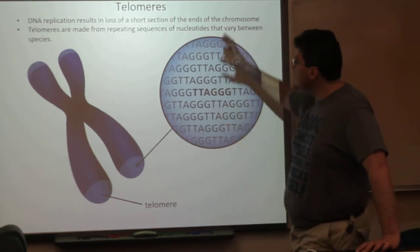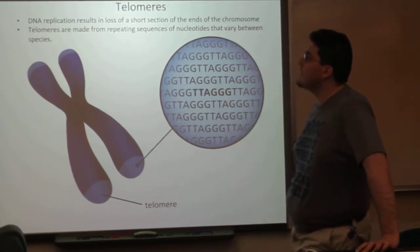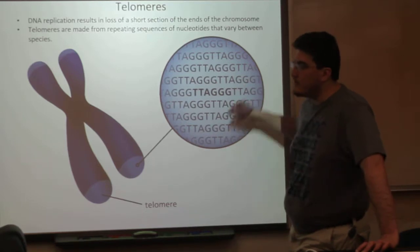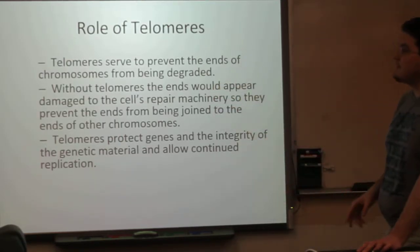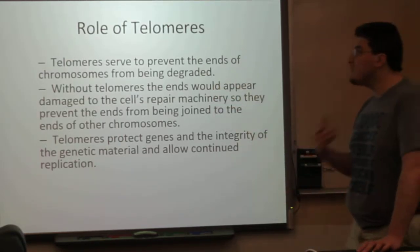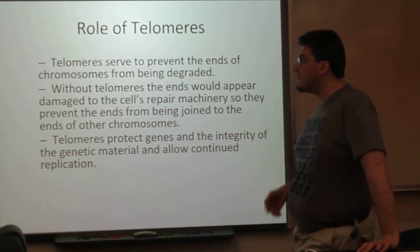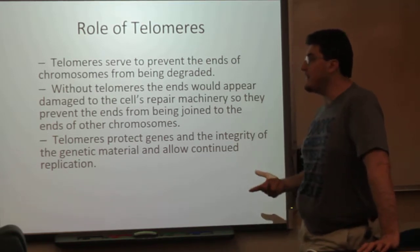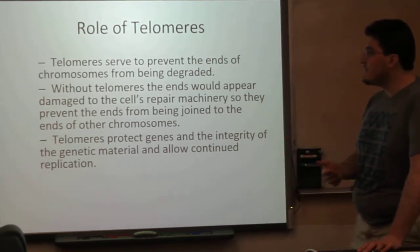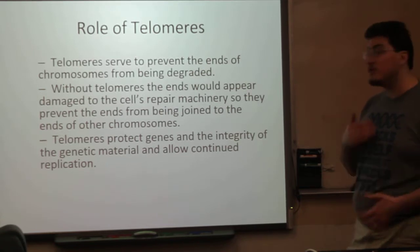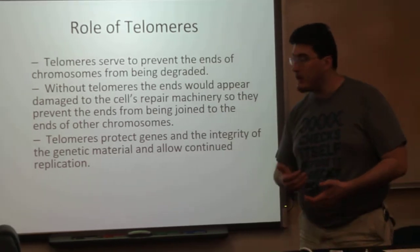Telomeres are made of repeating sequences of nucleotides that vary between species. The role of telomeres is to serve to prevent the ends of chromosomes from being degraded. Without telomeres, the ends would appear to be damaged to the cell's repair machinery enzymes.